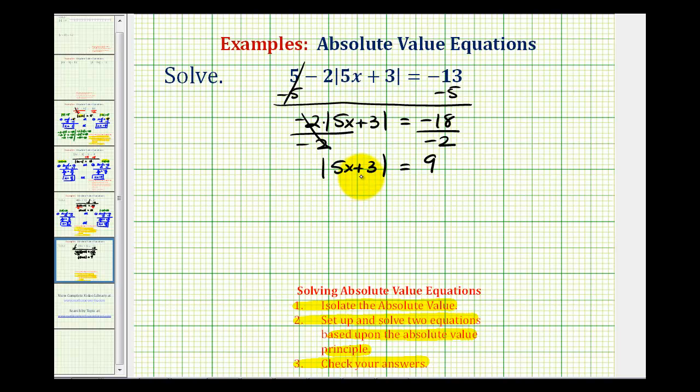We never want to try to set up the two equations before we isolate the absolute value first. Now we should be thinking about the numbers that have an absolute value of 9. The absolute value of positive 9 equals 9, but the absolute value of negative 9 also equals 9. This is the reason why we need two equations.